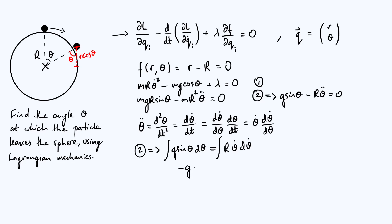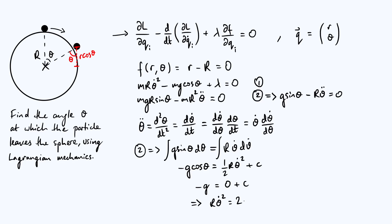Integrating sine gives minus cos, so we have minus g cos theta on the left. We integrate the right side with respect to theta_dot to get half R theta_dot squared plus a constant C. To find C, we use the initial condition: the particle is released from rest at the top of the sphere, so at theta equals zero, theta_dot equals zero. Substituting gives minus g equals C, so C equals minus g. Multiplying through by 2 and rearranging, we conclude that R theta_dot squared equals 2g times (1 minus cos theta).